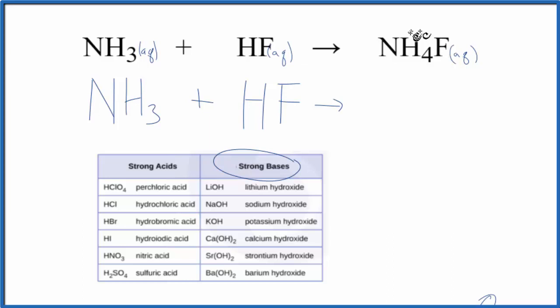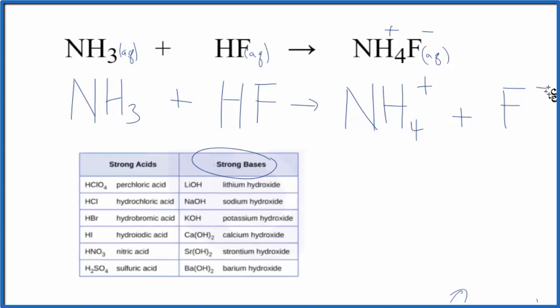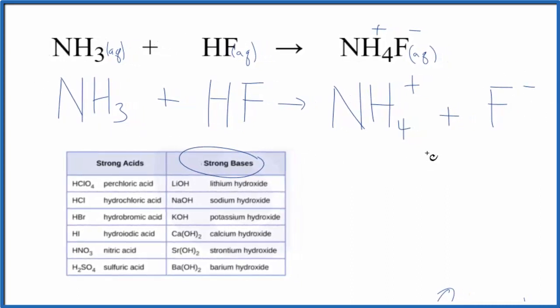And then for the ammonium fluoride, ammonium compounds, very soluble. So ammonium compound, the whole thing has a charge of 1 plus the fluoride ion, 1 minus. So we'll end up with NH4 plus plus the fluoride ion, F minus. So this is our net ionic equation.